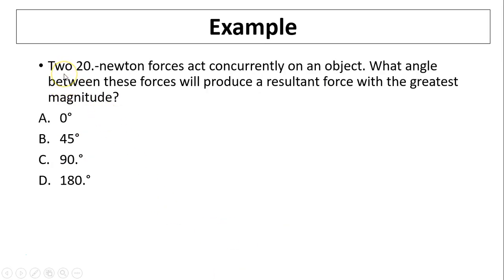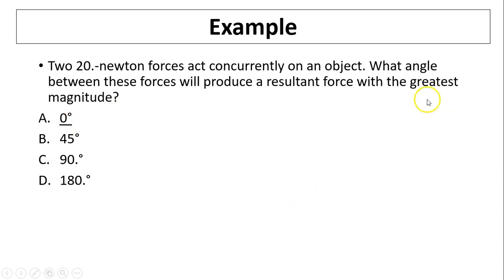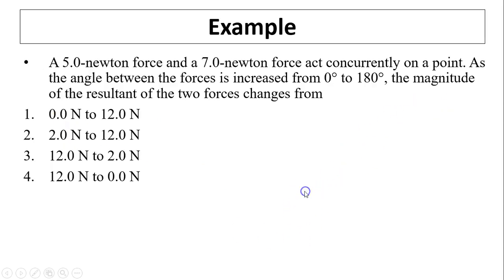Another example: two 20-newton forces act concurrently on an object. Concurrently means at the same point with tails touching. What angle between these two forces will produce a resultant force with the greatest magnitude? We learned that the greatest magnitude is produced when the angle is minimum — that is zero degrees.